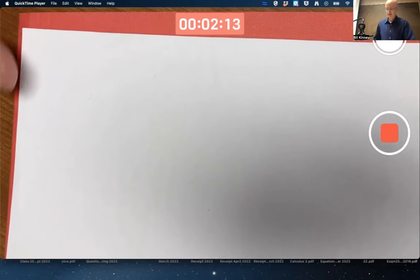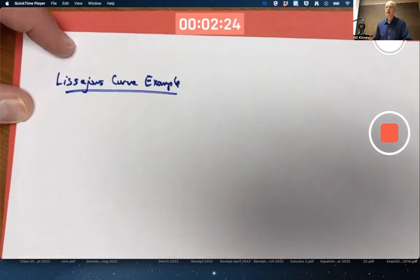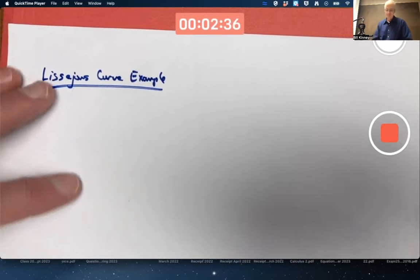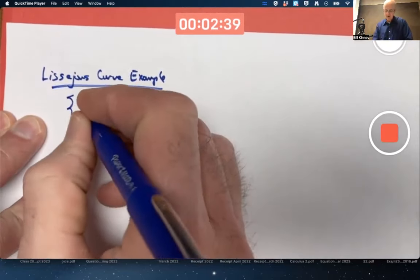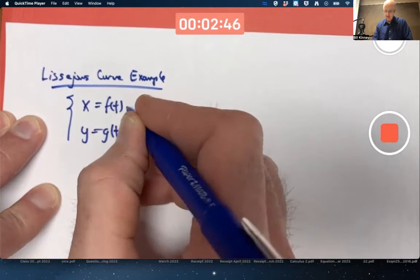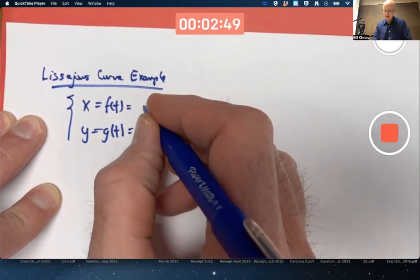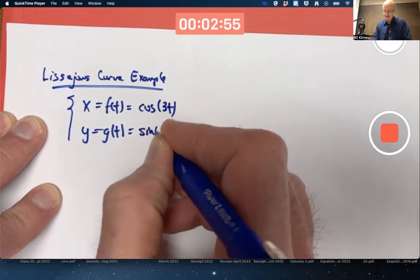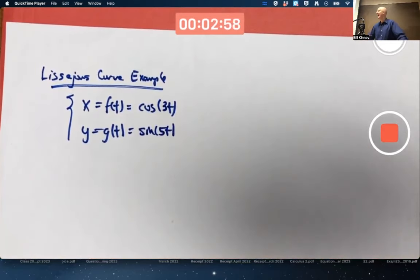Let's consider once again the Lissajous curve example that we considered on Monday. Now I would like to bring vectors into play to help us understand what's going on with the Lissajous curve example. The initial setup is the same as before.